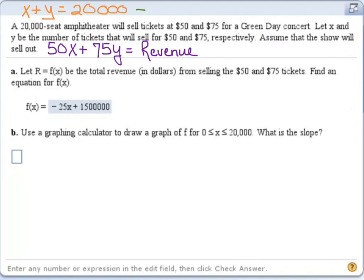So part A would like us to come up with a total revenue function in terms of X. So F of X, meaning they want one input variable of X. So I'll need to take one of my equations, X plus Y equals 20,000, and solve for Y, giving me Y equals 20,000 minus X. So what I'd like to do is plug that in for where Y is. This would give me 50X plus 75 times the quantity 20,000 minus X. And this is my revenue function.